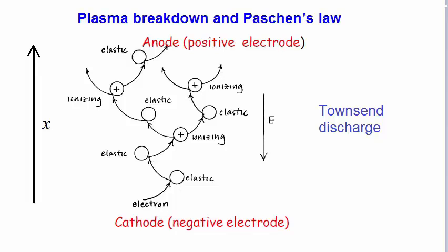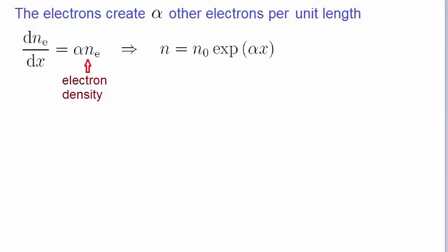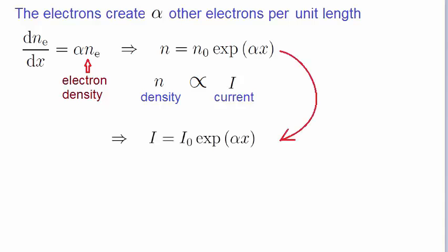The electrons produced in ionization go on to further accelerate, and they themselves would cause further ionization. This avalanche of charge production by this mechanism is known as a Townsend discharge. Let's say that the electrons that are accelerating create alpha other electrons per unit length. We can write this as a linear first order differential equation like this, where nE is the electron density. A solution to this equation is of this form. Now, the density n of charges is directly proportional to the current that will flow between the anode and the cathode. So we substitute the current I for n in the above equation, which becomes this. The current will grow exponentially if alpha is greater than zero.